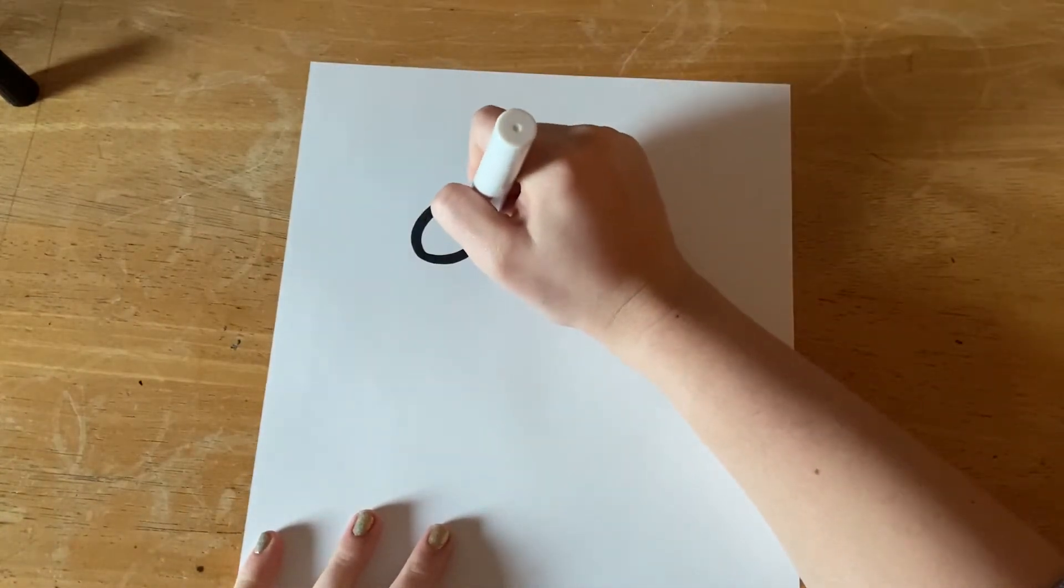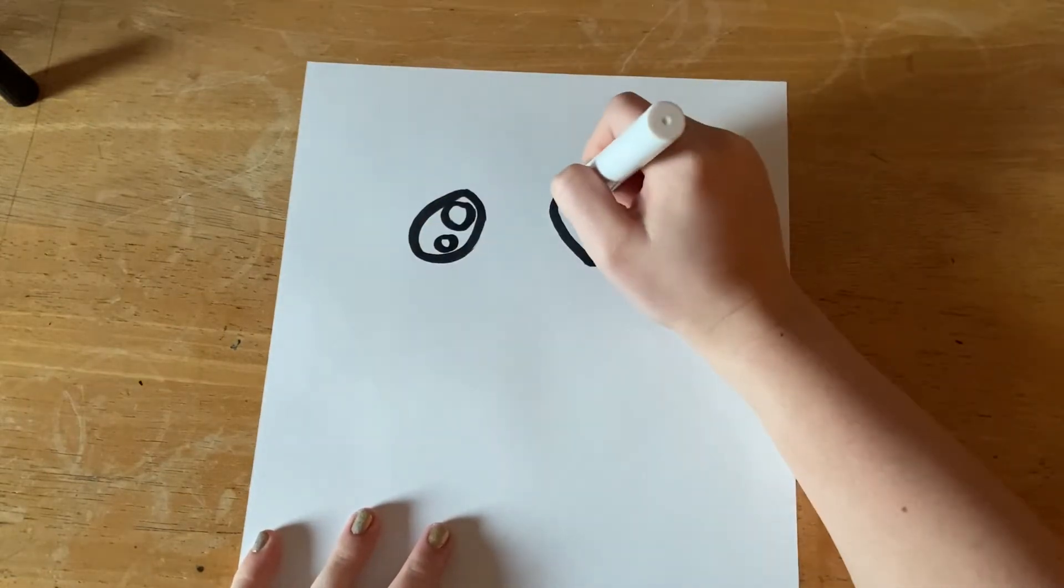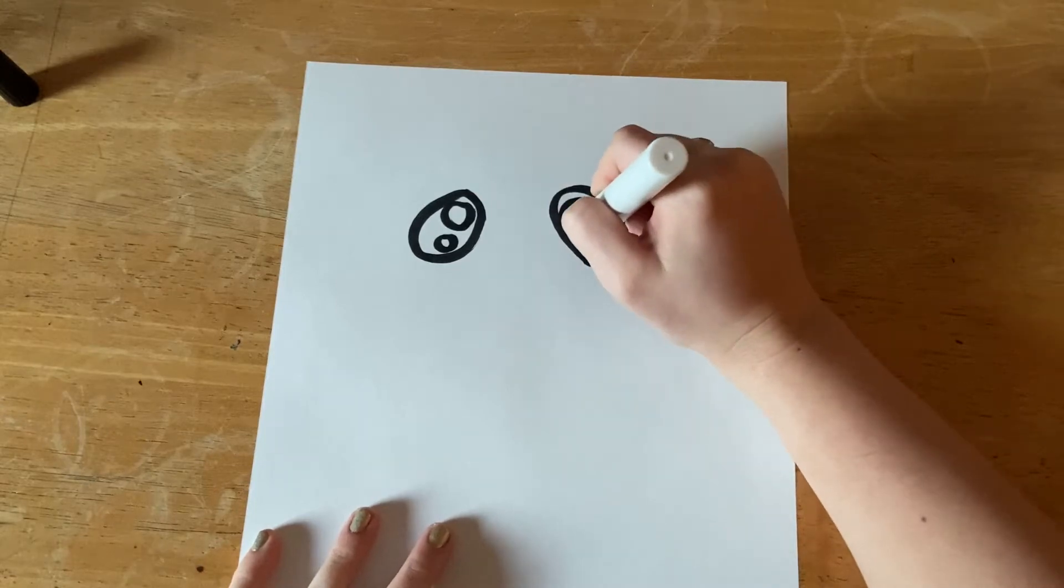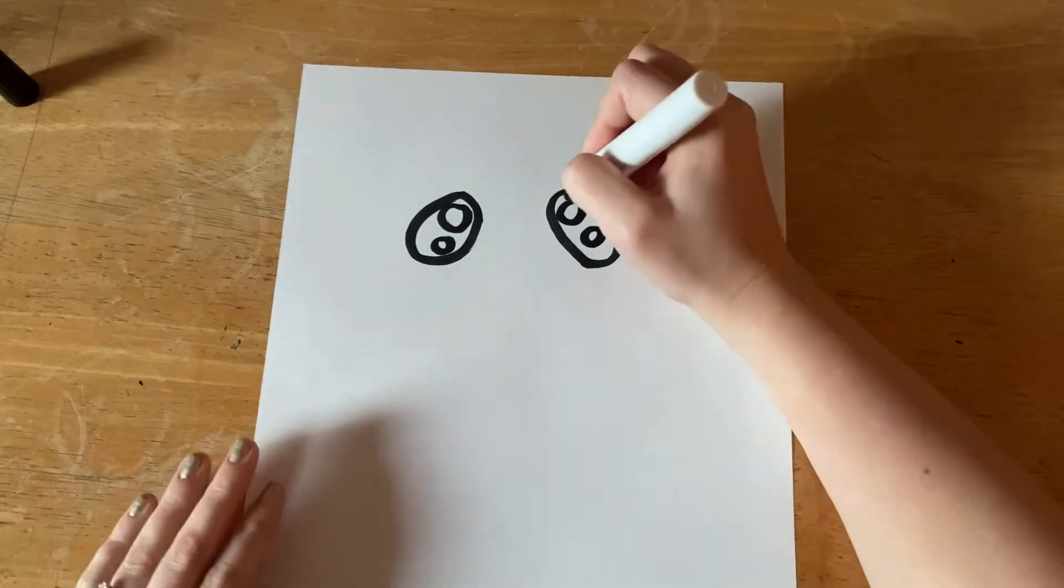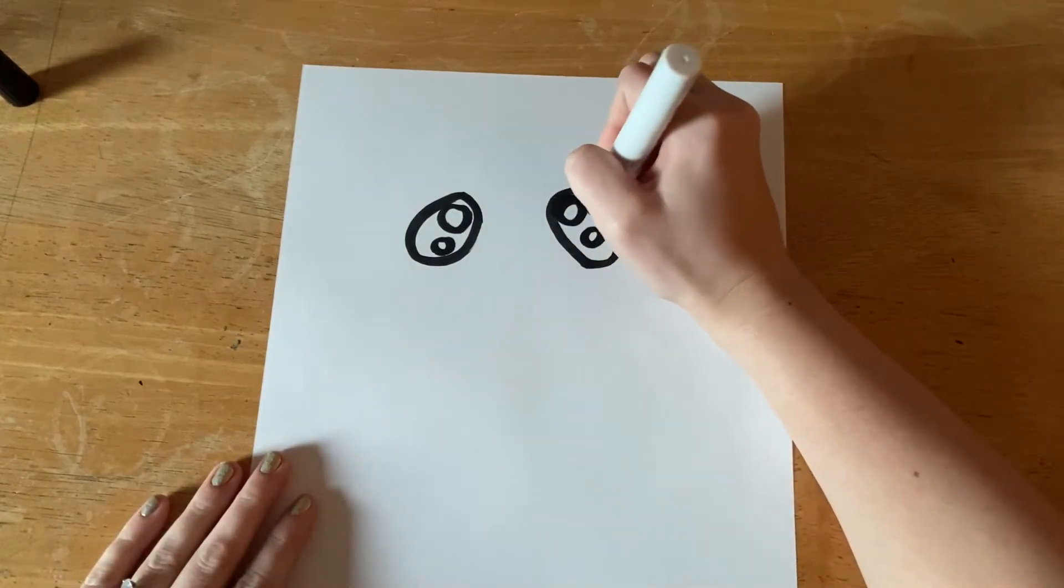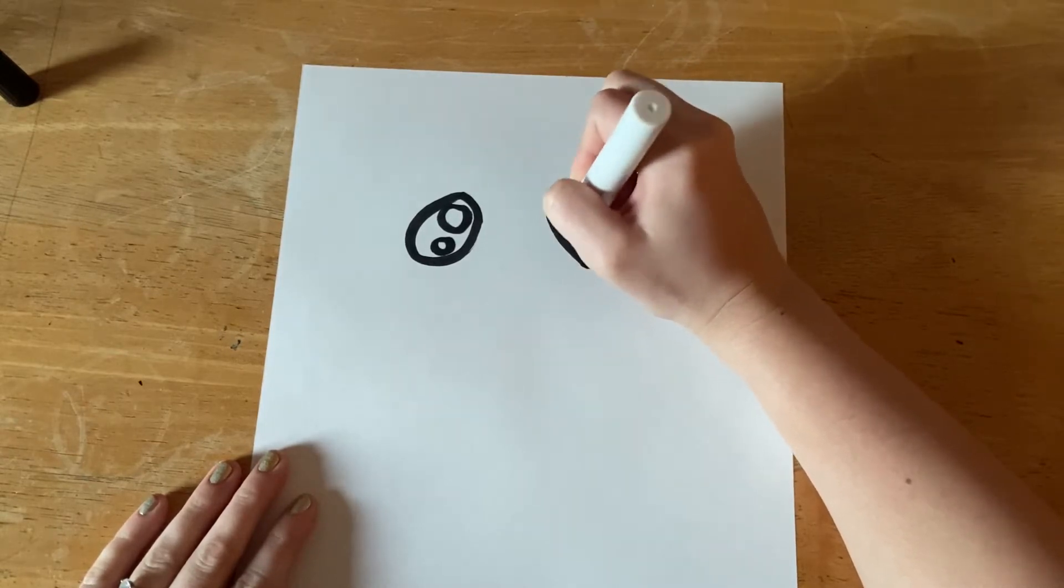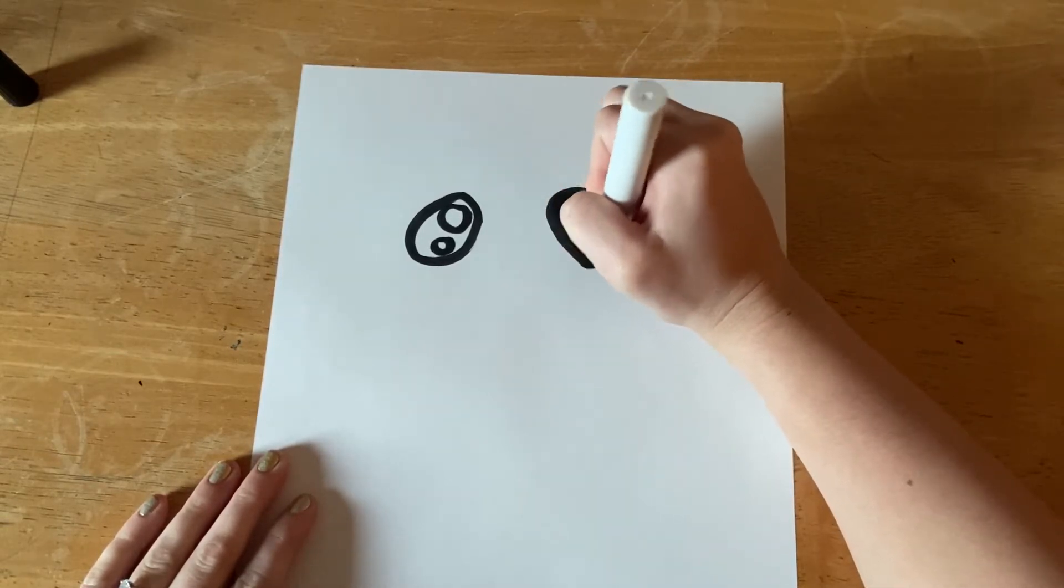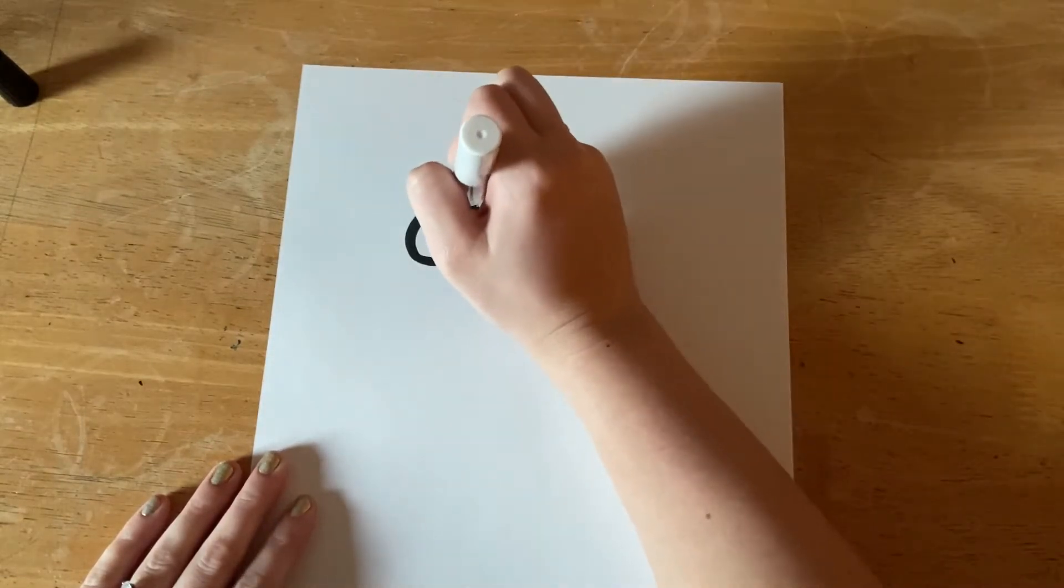Then we're going to add a big circle on the top of the eye and a little one on the bottom. This is going to be the highlight. Okay, then you can fill in the parts that are not the highlights. This is going to make our penguin look so cute.